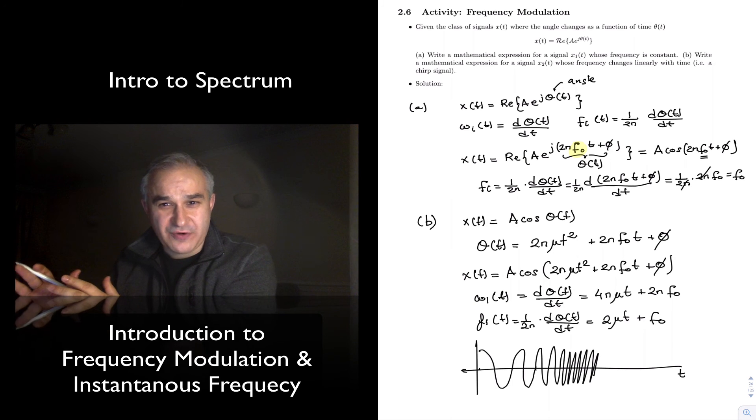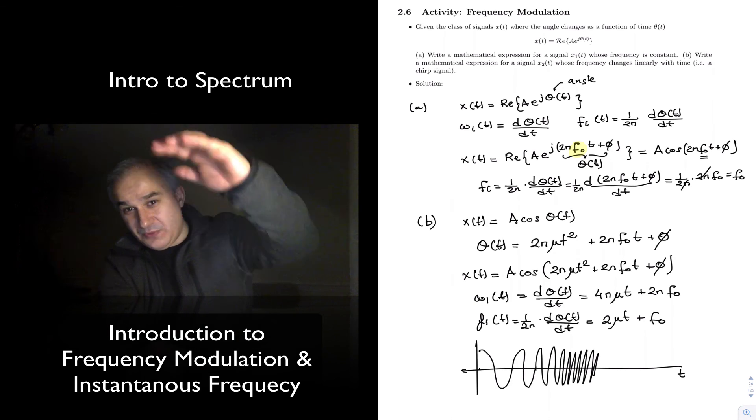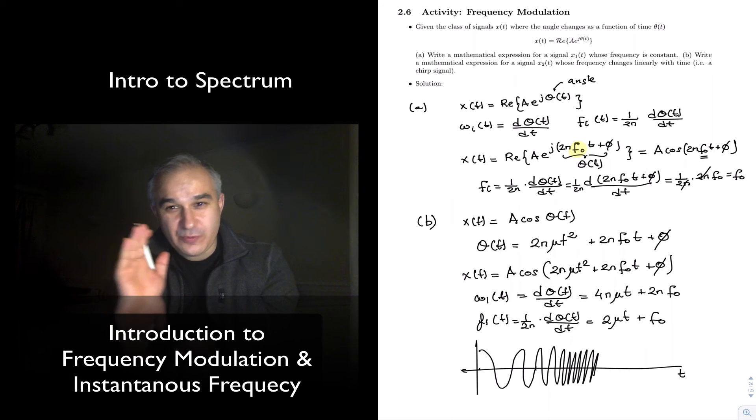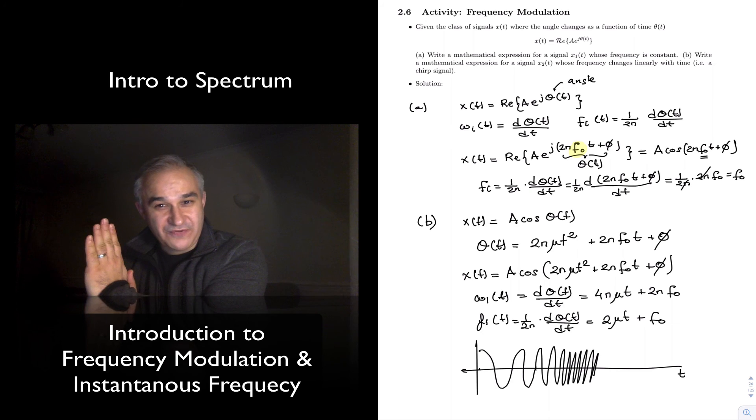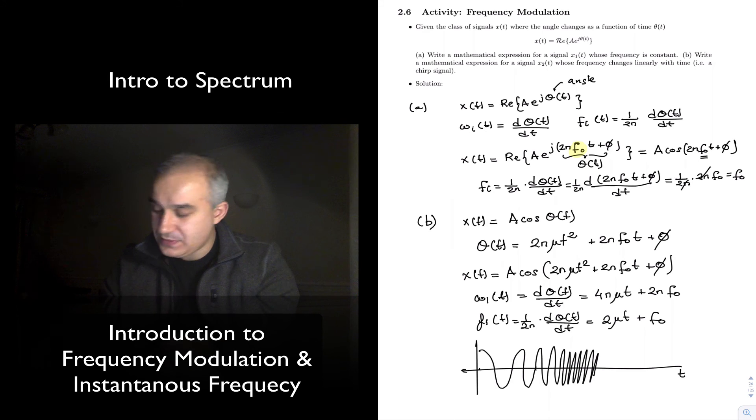and then change the property of the carrier. So, what are the properties that you can change? Well, you can change the amplitude and do amplitude modulation. You can also change the frequency. So, you have a carrier frequency and deviate it a little bit in proportion to your information signal. That's frequency modulation. Or you can do also phase modulation.